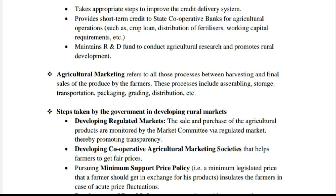Agricultural marketing refers to all those processes between harvesting and final sale of products. These processes include assembling, storage, transportation, packaging, grading, distribution, etc. Steps taken by the government in developing rural markets include developing regulated markets, where the sale and purchase of agricultural products are monitored by the market committee, thereby promoting transparency.